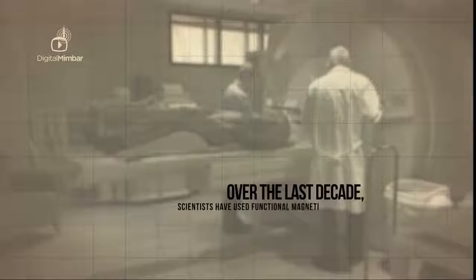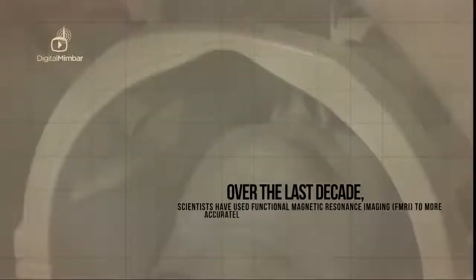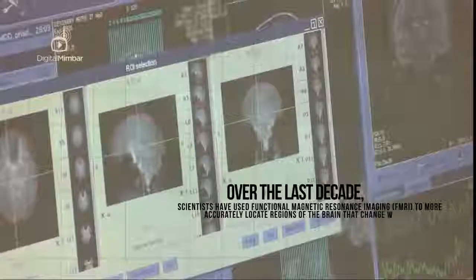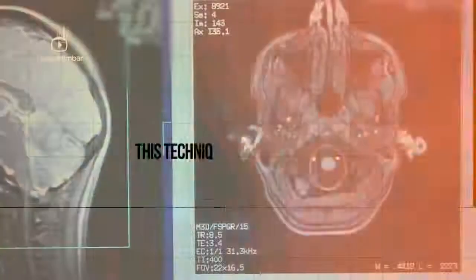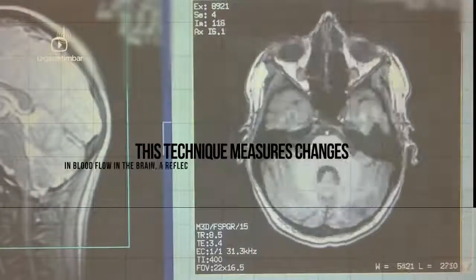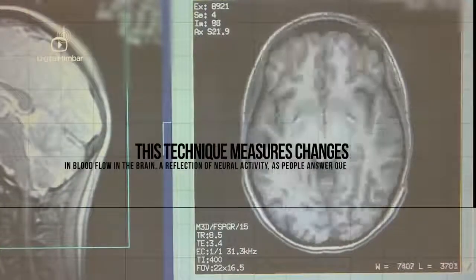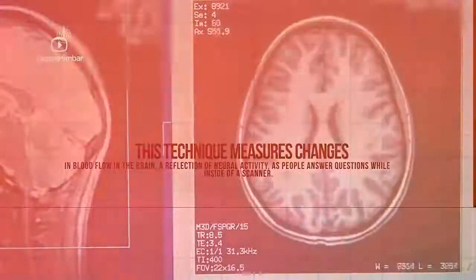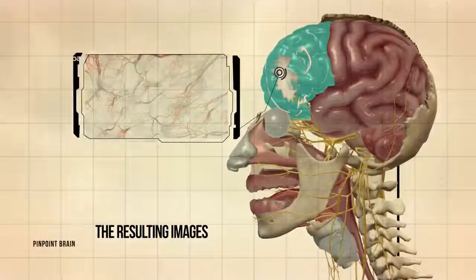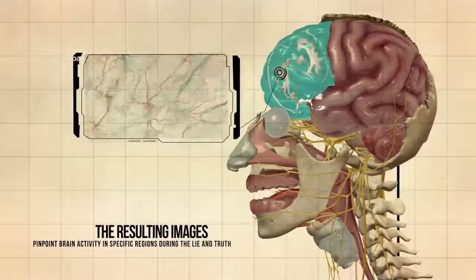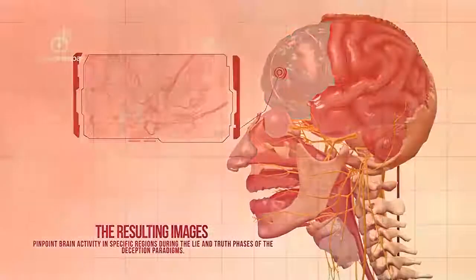Over the last decade, scientists have used functional magnetic resonance imaging, fMRI, to more accurately locate regions of the brain that change when a person lies. This technique measures changes in blood flow in the brain, a reflection of neural activity, while people answer questions inside a scanner.